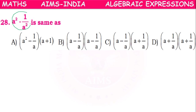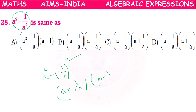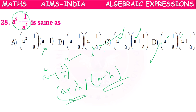Next: a² - 1/a² is the same as a² - (1/a)², which is in the form of a² - b² = (a+b)(a-b), giving (a + 1/a)(a - 1/a). So option C is correct.